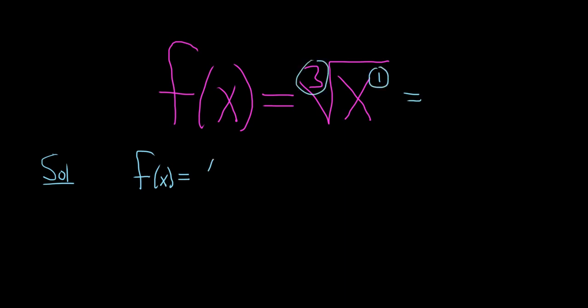So in this case, it's just x to the 1 over 3. Every single time, just this number over this number.